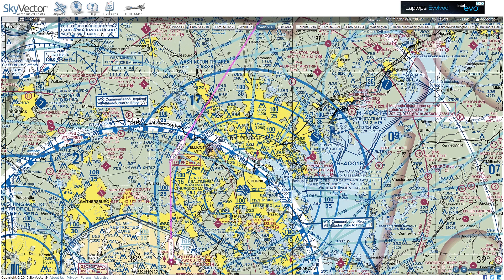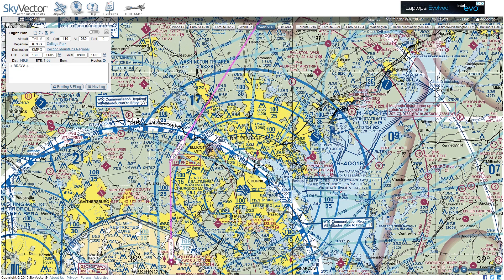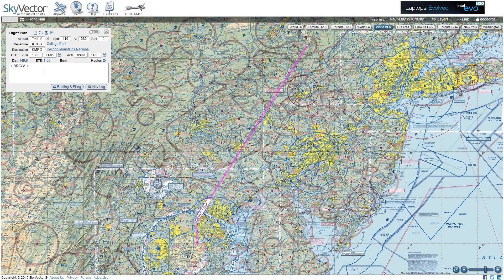If we click Flight Plan in the upper left, we see the departure and destination we selected, and in the en route box we see the fix Brave as well. These can be typed in as well as clicked in directly from the map.